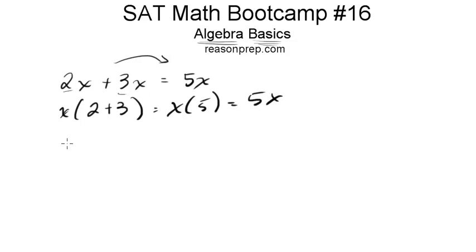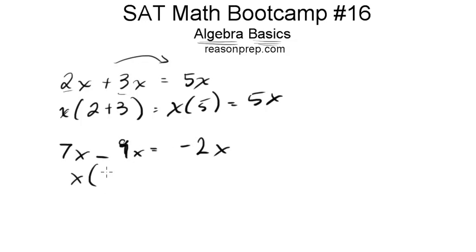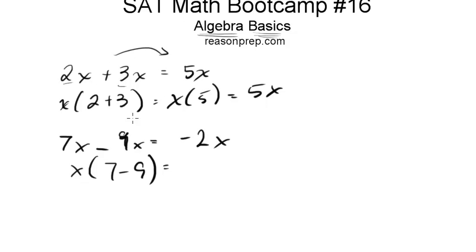What about subtraction? 7x minus 9x is just going to be negative 2x, for the same reason. This would be x times (7 minus 9), which is x times negative 2, which is just minus 2x. Being comfortable combining like terms is so important not only for the SAT, but for a lot of math.